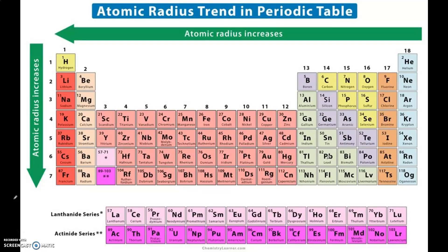Looking at the periodic table, sodium and potassium actually have the same core charge. However, because potassium is a larger atom, that nuclear attractive force has to operate over a greater distance. Potassium has a larger atomic radius, and even though it has the same core charge as sodium, because that force operates over a greater distance, potassium can't hold on to its outer electrons as well as sodium. This applies for all elements as we move down the periodic table.